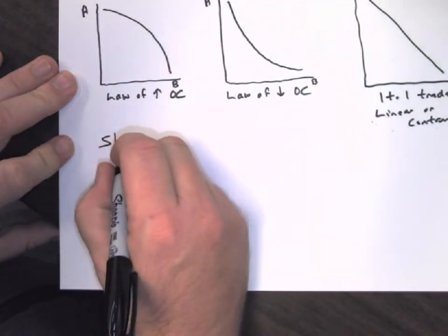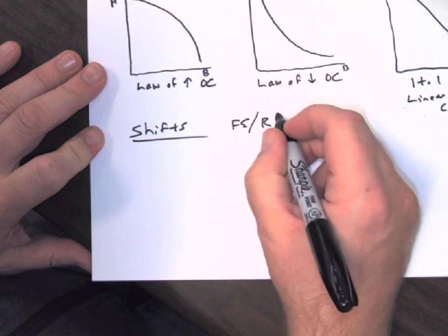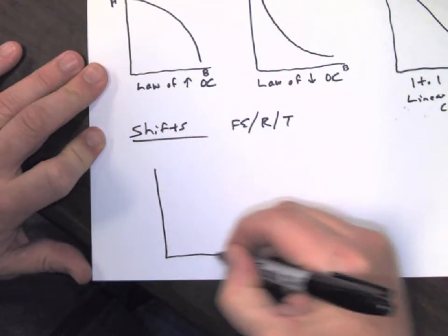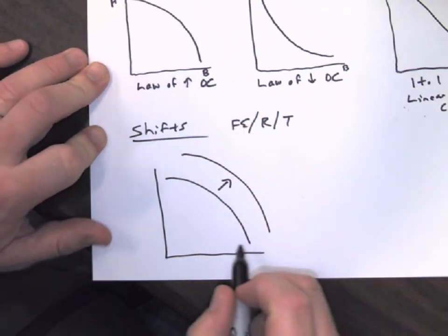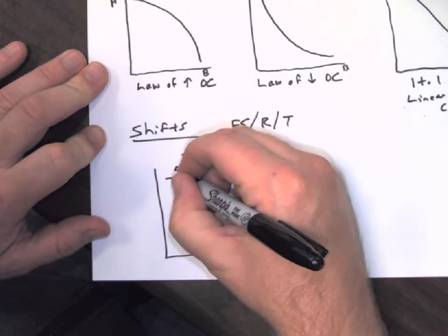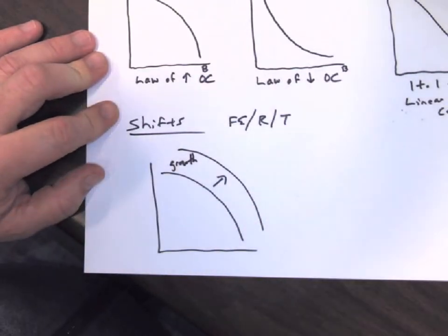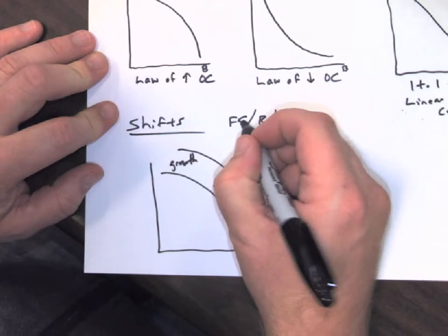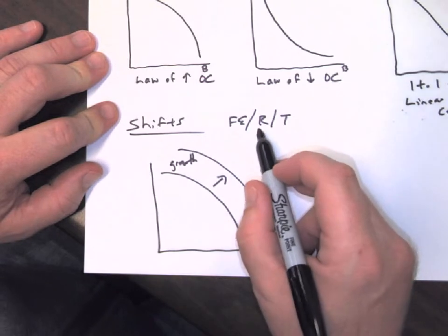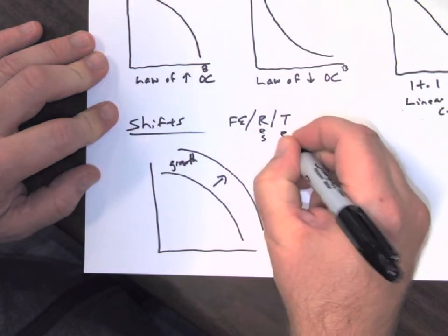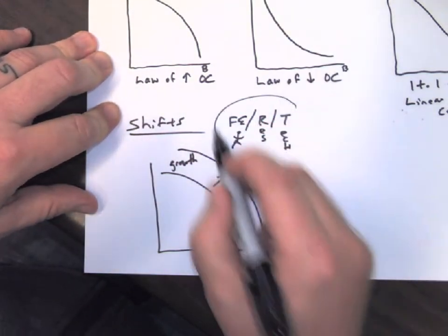The other thing we have is shifts. Remember, we have full employment — our people, our resources, or our technology. If we have our production possibilities curve and we are able to have economic growth, this would be our rightward or outward shift, showing growth. We can make more GDP than we could previously because of our amount of people, resources, or technology. If we improve our human capital, our real capital, the quality and quantity of our resources, and technology — if we simply get more people, we can be more productive. All of these things lead to growth.